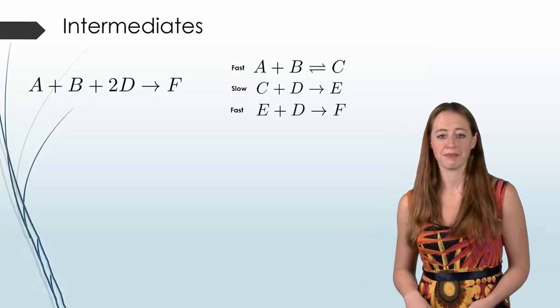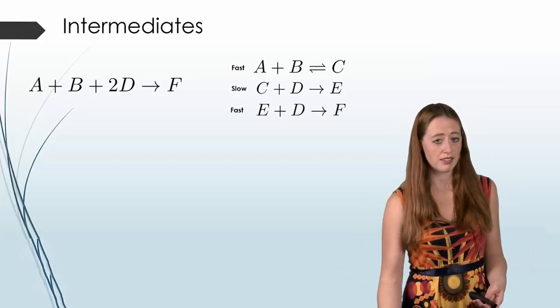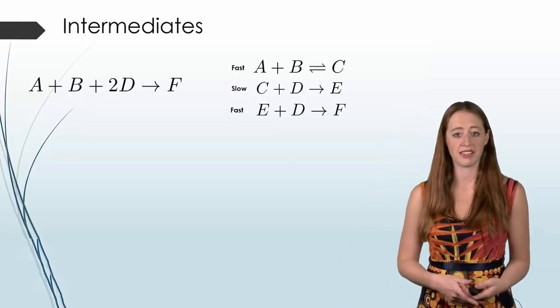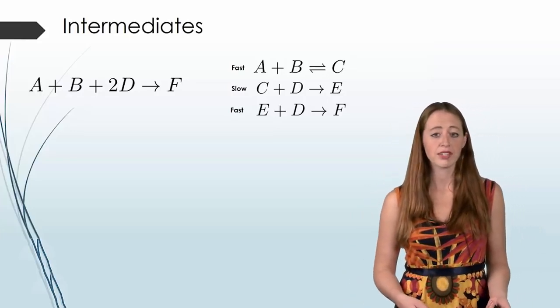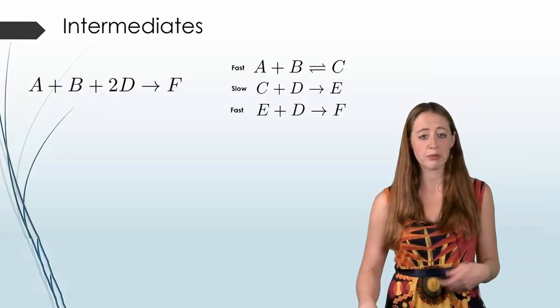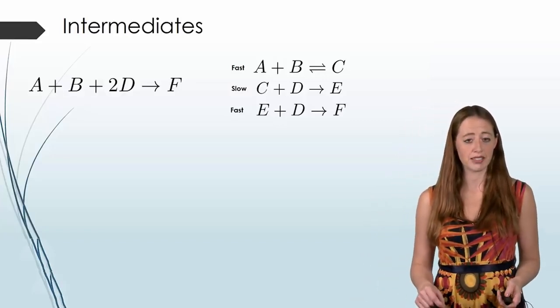And then I have one more fast step. So this is going to be a three step system where E plus another D goes to F. And having three steps is perfectly fine, that's something that's pretty common. Now I want to do a little bit of a review from last time.